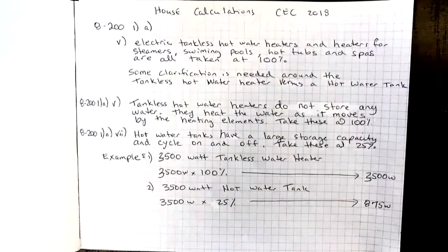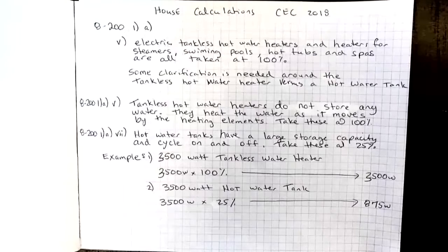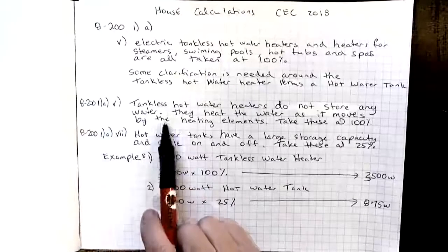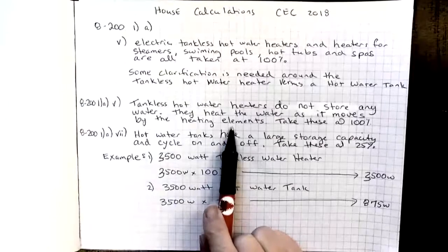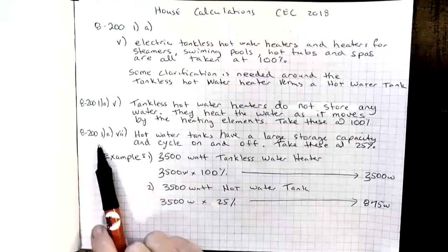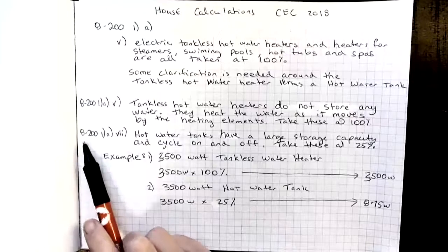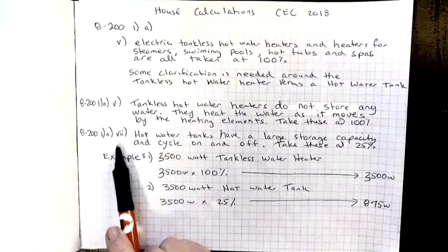Some clarification is needed around the tankless hot water heater versus a hot water tank, as there often is a lot of confusion about this. Rule 8201A5 tells us that tankless hot water heaters have to be taken at 100%, because they don't store any water — they heat the water as it moves by the heating element. This is different than a hot water tank, which falls under the catch-all rule 8201A7.